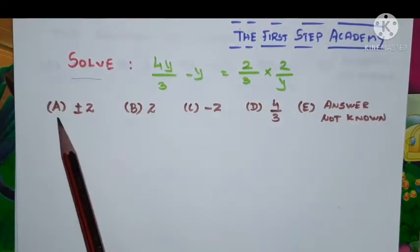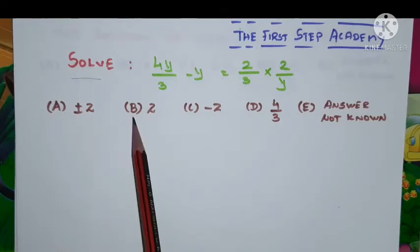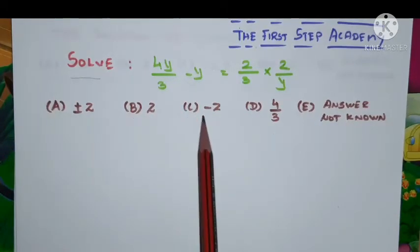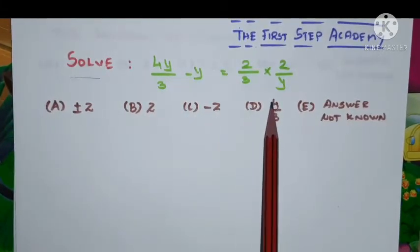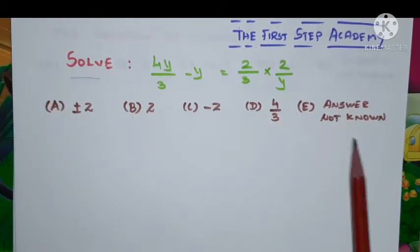Given options are option A plus or minus 2, option B 2, option C minus 2, option D 4 by 3, option E answer not known.